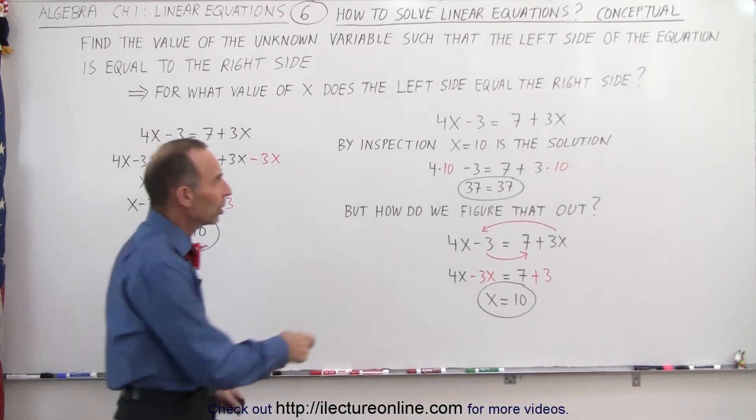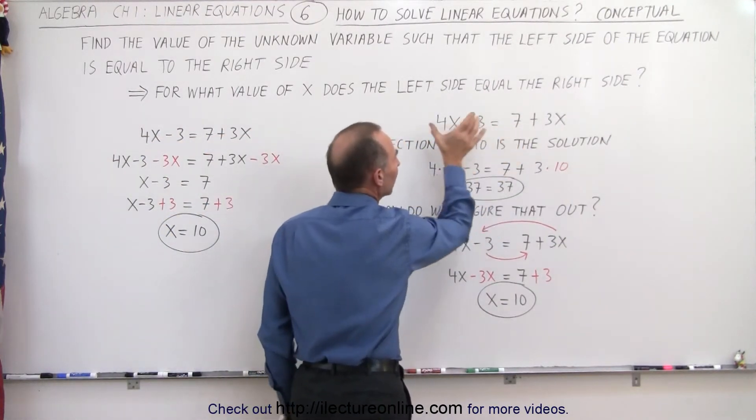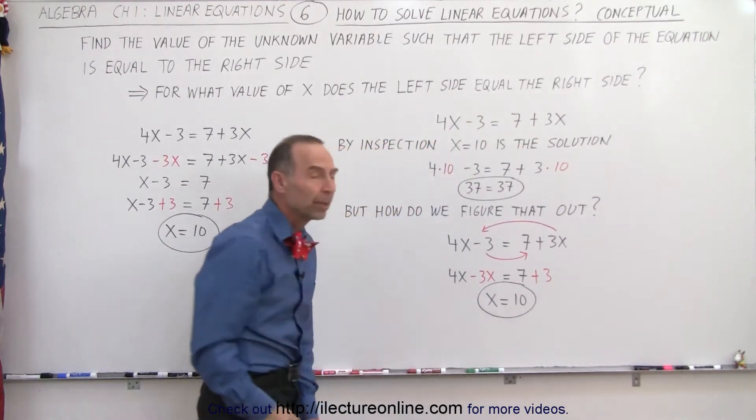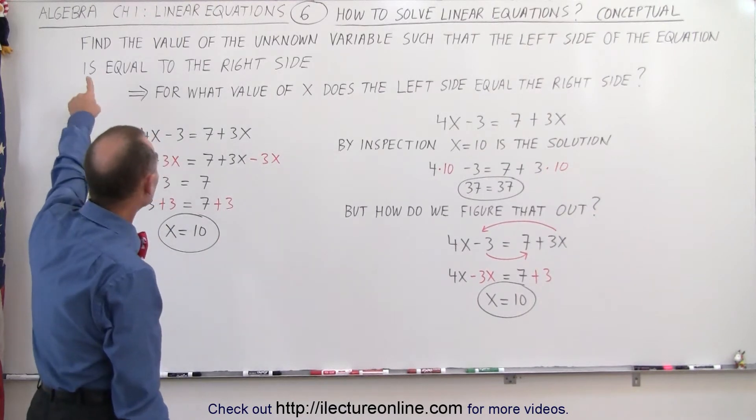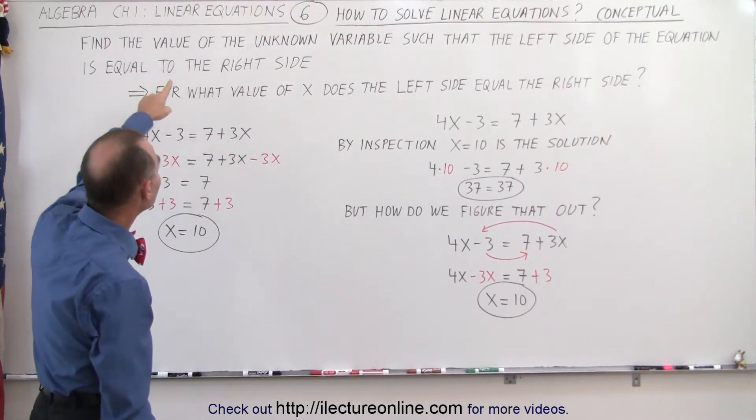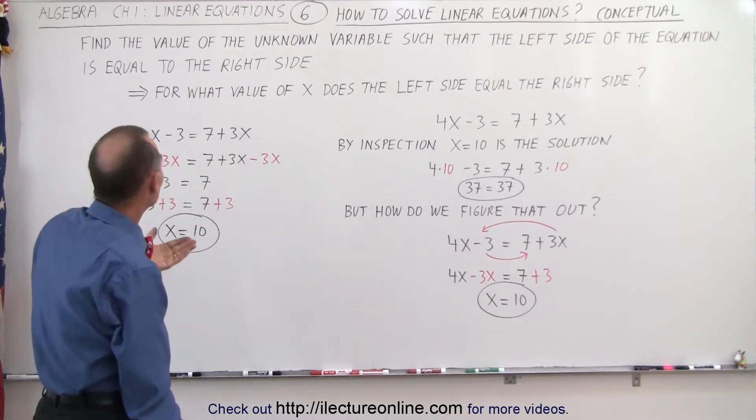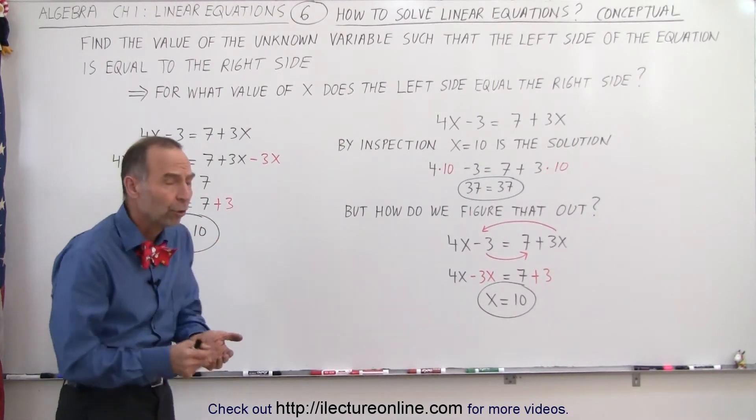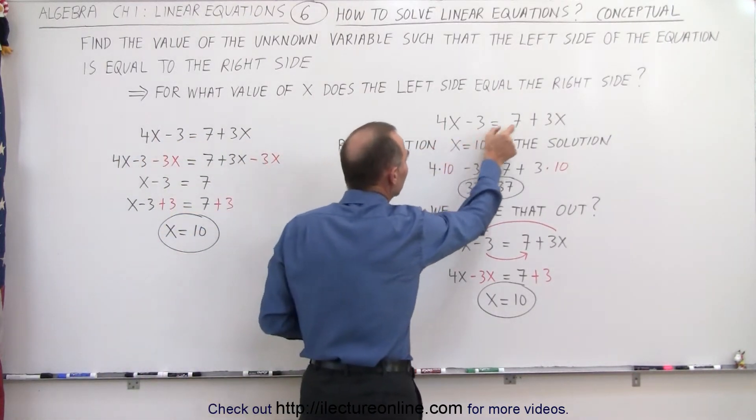So we have an equation, a left side, an equal sign, and a right side, and the equation means that the left side equals the right side. But there's a variable in there, the variable x, and we see that solving an equation means to find the value of the unknown variable such that the left side of the equation is equal to the right side. So for what value of x will the left side equal the right side?